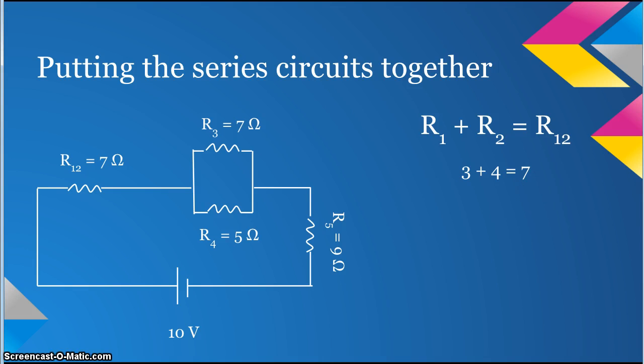Now I will look for a parallel circuit. Parallel circuits have more than one path for the current to flow through. Resistors 3 and 4 have two paths for the current to take, so it is a parallel circuit.